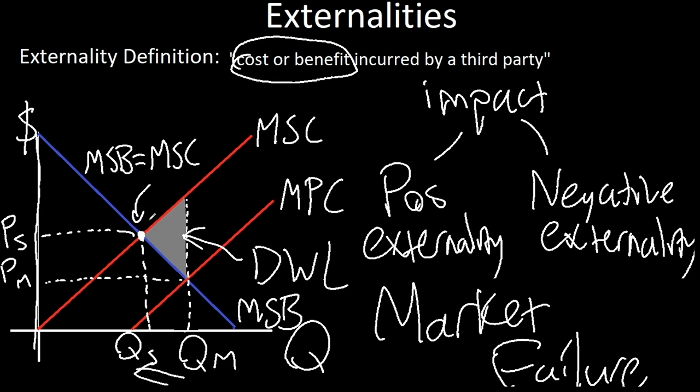One way is for a government to step in and tax this firm to reduce the incentive for this goods production. And by using an appropriate tax, the firm can then start paying the entire social cost of their actions. This is essentially what the entire externality unit revolves around. Let's start digging into the different types of externalities.